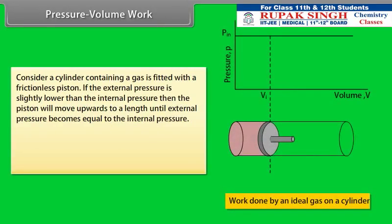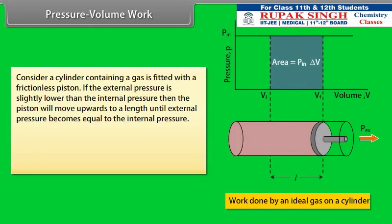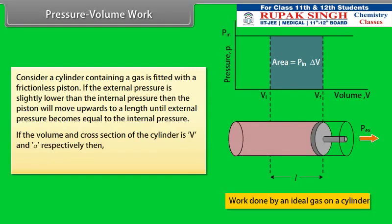Pressure-volume work: consider a cylinder containing a gas fitted with a frictionless piston. If the external pressure is slightly lower than the internal pressure, the piston will move upwards until external pressure equals internal pressure. If the volume and cross-section of the cylinder are V and A respectively, then the work done by the system equals P × A × L, which equals P × ΔV.